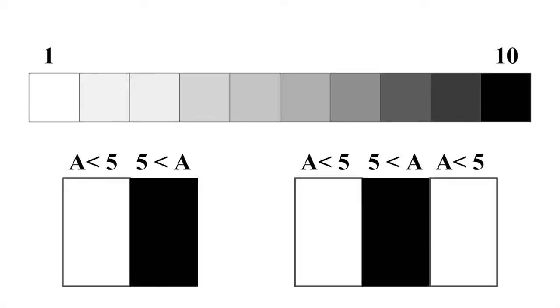When the algorithm looks at an area, it first maps out the darkness of that area from 1 to 10, where 1 is the lightest and 10 is the darkest.